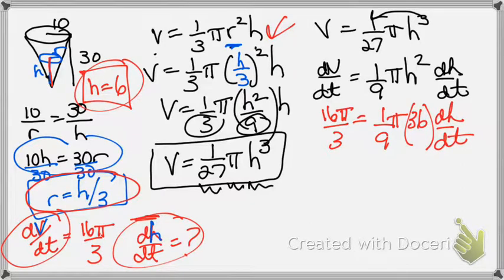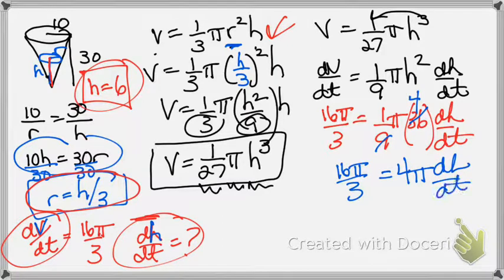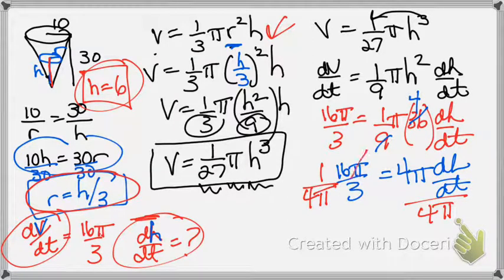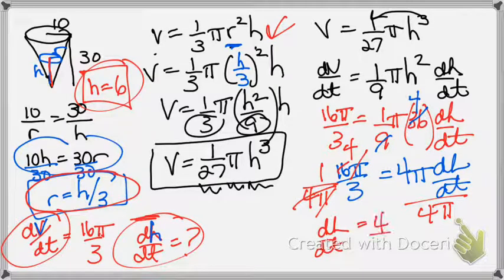Okay. Cross cancel. 36 divided by 9 is 4. So I have 16π/3 equals 4π dh/dt. Divide by 4π on both sides. Or divide by 4π can look like that. The π's will cancel. 16 and 4 cancels. And I get dh/dt equals 4/3.